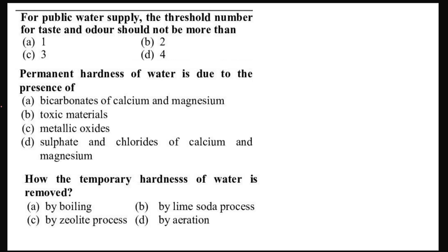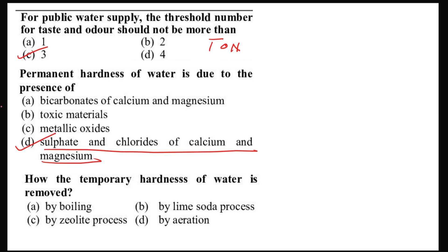For public water supply, the threshold number for taste and odor should not be more than 3. Permanent hardness of water is due to the presence of sulphates and chlorides of calcium and magnesium. How is temporary hardness of water removed? Generally, by boiling.